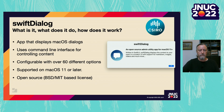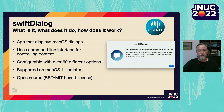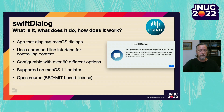So what is Swift Dialogue, what does it do, and how does it work? Swift Dialogue is a utility app that can be used to display information, get user input, or even trigger custom events all from the command line or from your own custom scripts. It displays macOS dialogues and is intended to present information from management scripts in a user-friendly way. Using command line arguments, Swift Dialogue is configurable with over 60 different options, supported by macOS 11 or later, and is open sourced with a BSD MIT based license.